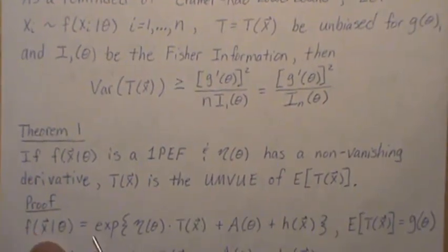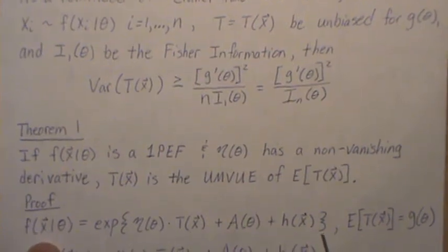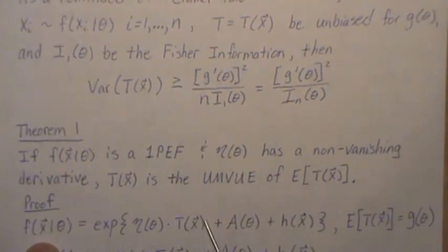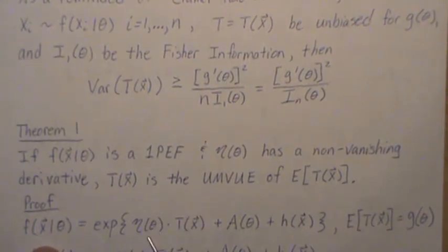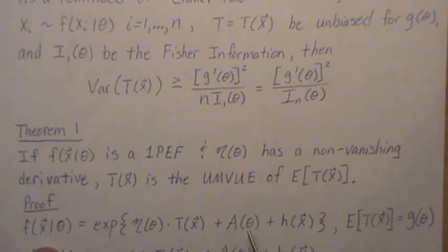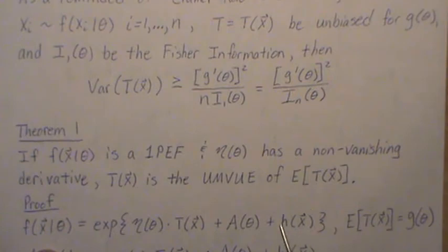As a reminder, this is the form of a one-parameter exponential family. This is our sufficient complete statistic. This is a function of the parameter eta of theta. A of theta, often called the log partition, is only a function of theta, and H of x is only a function of the x's.